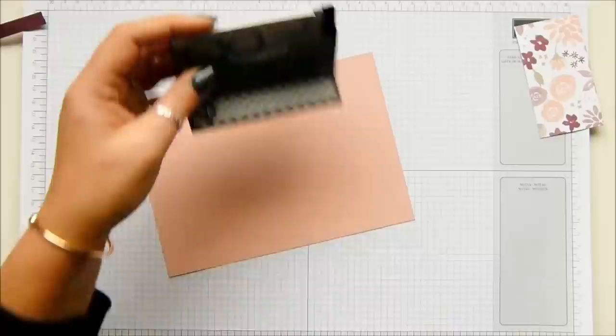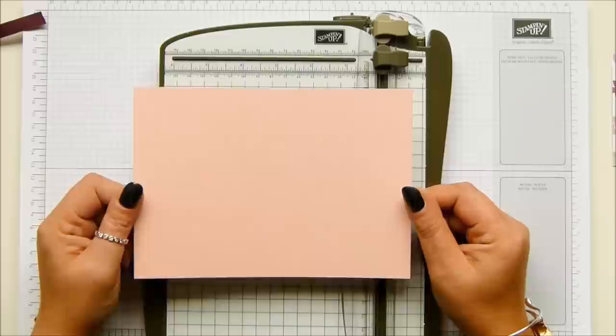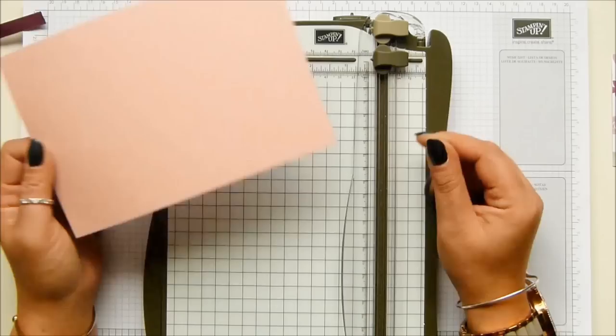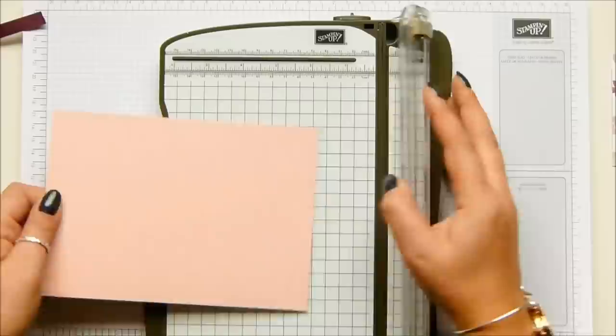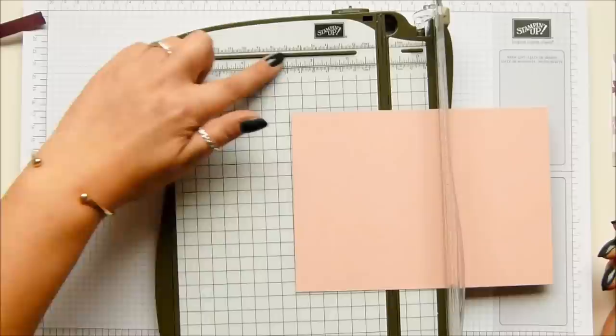Okay, piece of cardstock. I don't work with a scoring board on this, I work from a trimmer. So I'm going to give you metric instructions and measurements first, not imperial. So 13 and a half by 19 centimetres, working with my trimmer. I'm moving the dark grey blade out of the way and working with the pale grey scoring tool.